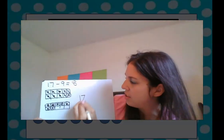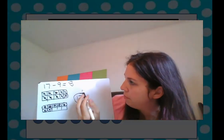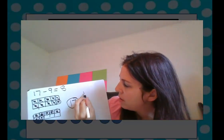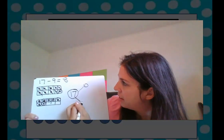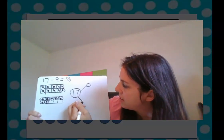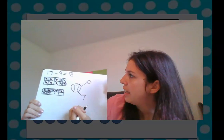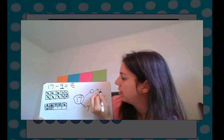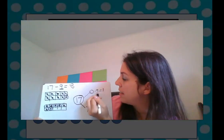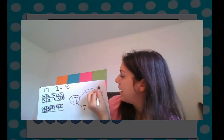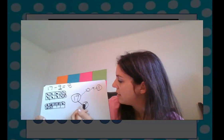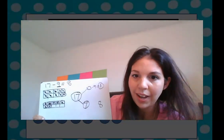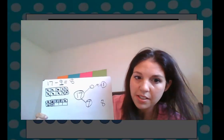Another way that we could solve this problem is that 17 is broken up into a 10 and 7. And we need to take away 9. So if we take 9 away from 10, 10 minus 9 equals 1. Now we have 1 and 7. That gives us 8. That's just another way that you could solve it.